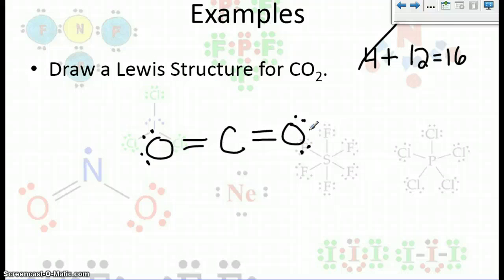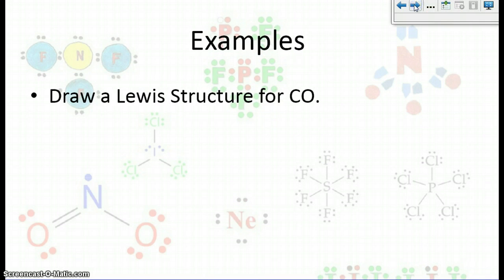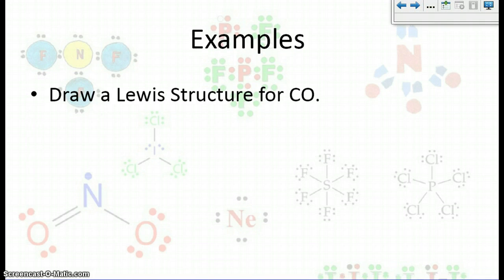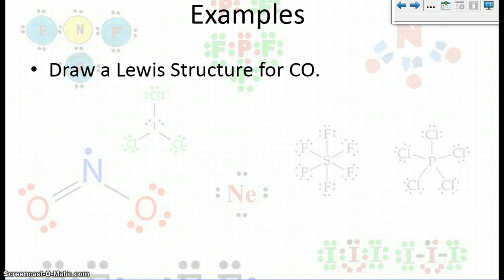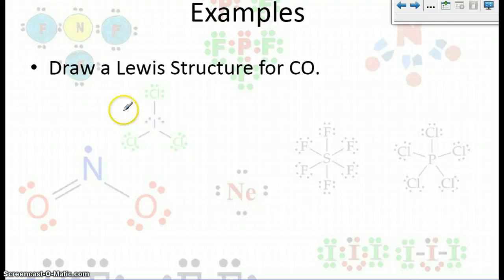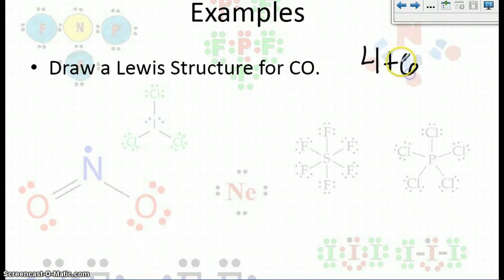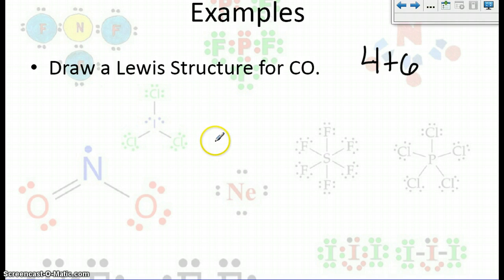Let's try another example: carbon monoxide, CO. We have four valence electrons for carbon and six for oxygen, so that's ten valence electrons total.